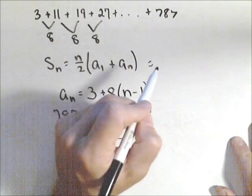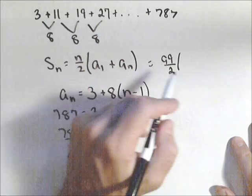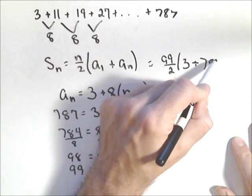So we can go back up and apply our formula. So we have 99 over two times our first term, which is three, plus our last term, which is 787.